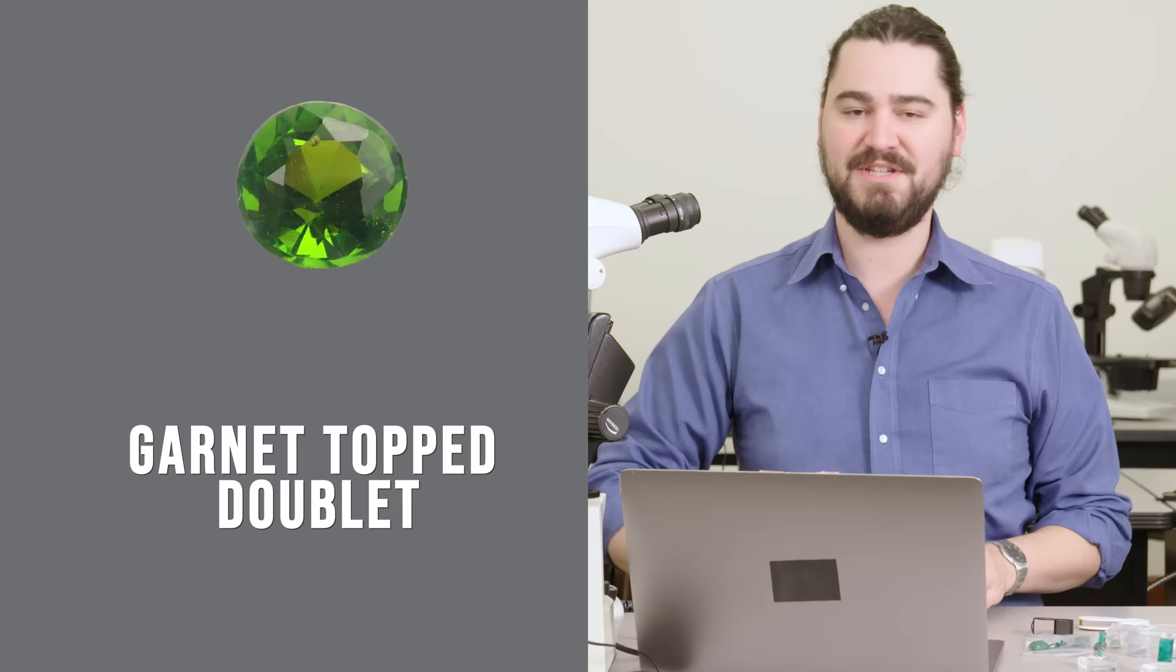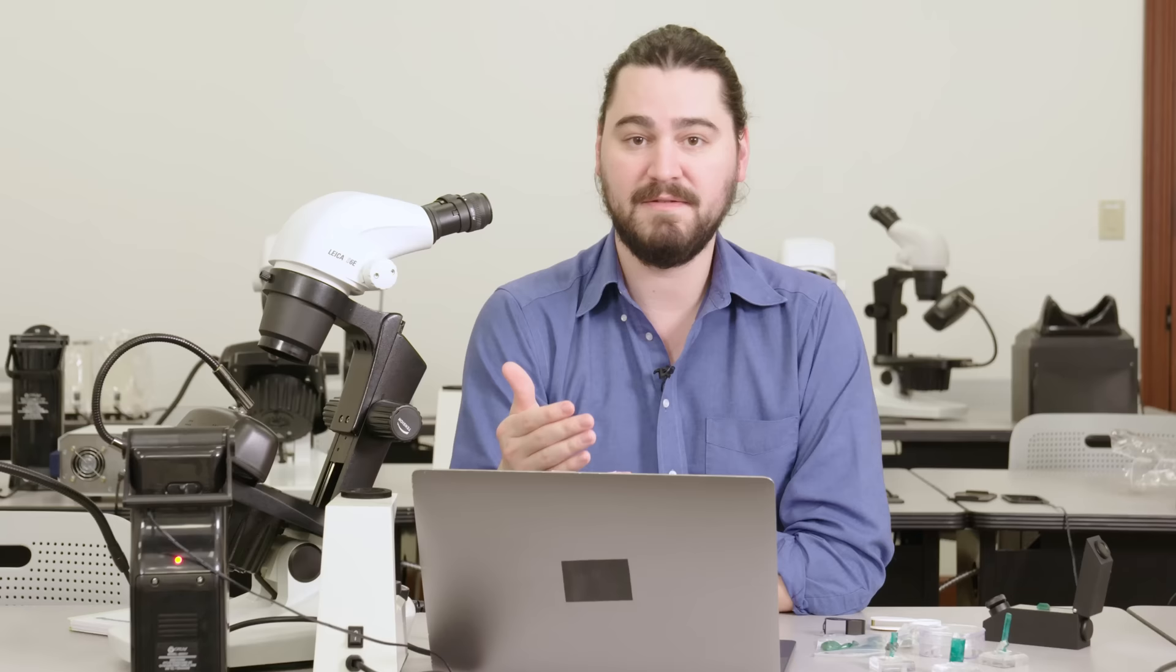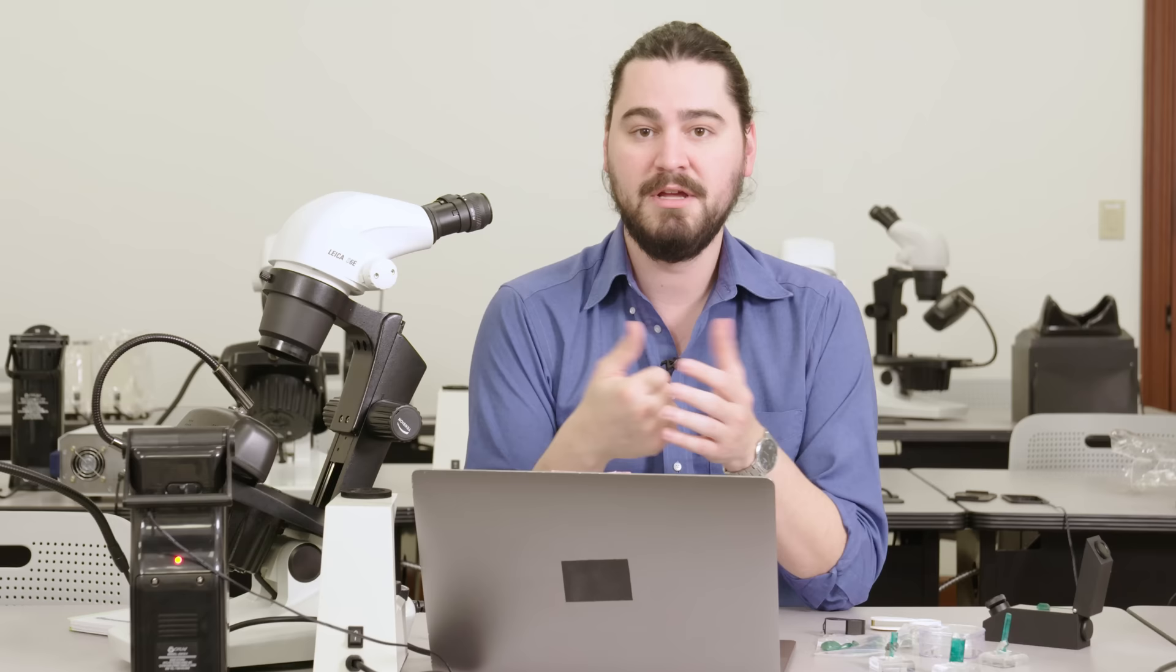A less common but still used composite is the garnet-topped doublet. So this one works in kind of mysterious ways. You take a slice of red almandine garnet, and that's your top. Your base is glass, and it's whatever color you want it to be, because it will give the appearance of that color to the whole stone, regardless of the red top. It's really crazy. So a garnet-topped doublet with a green glass base will appear completely green when viewed from the top.